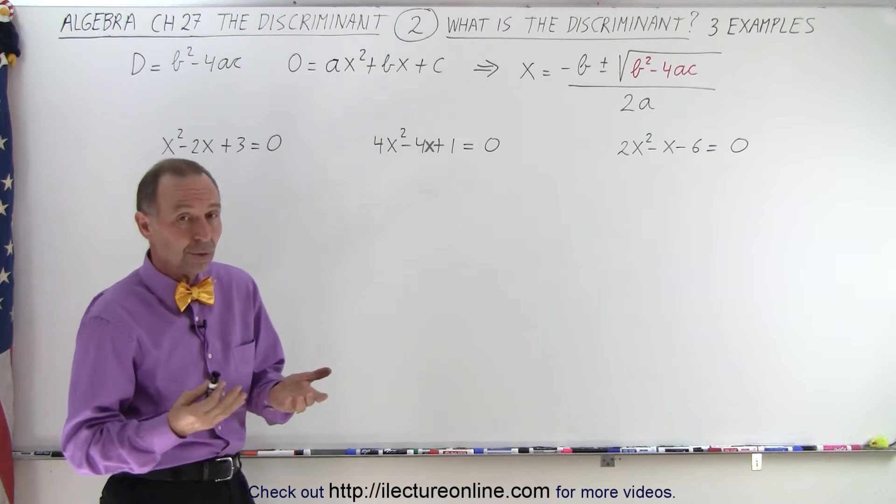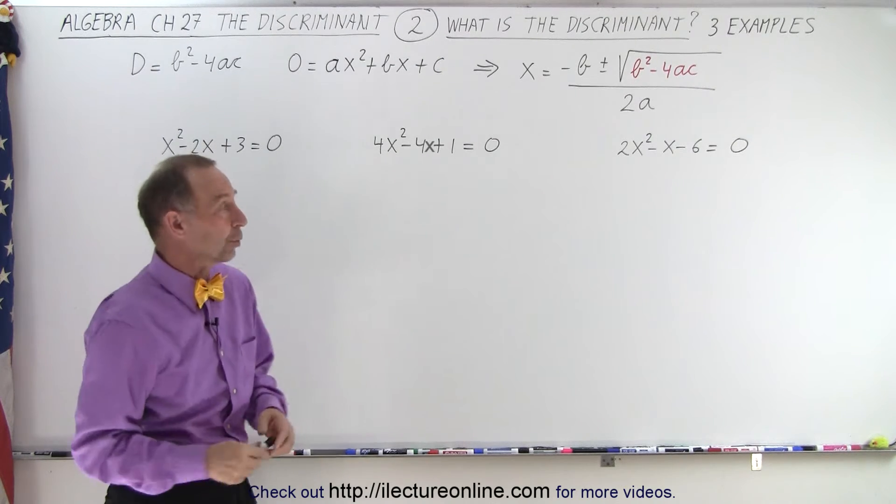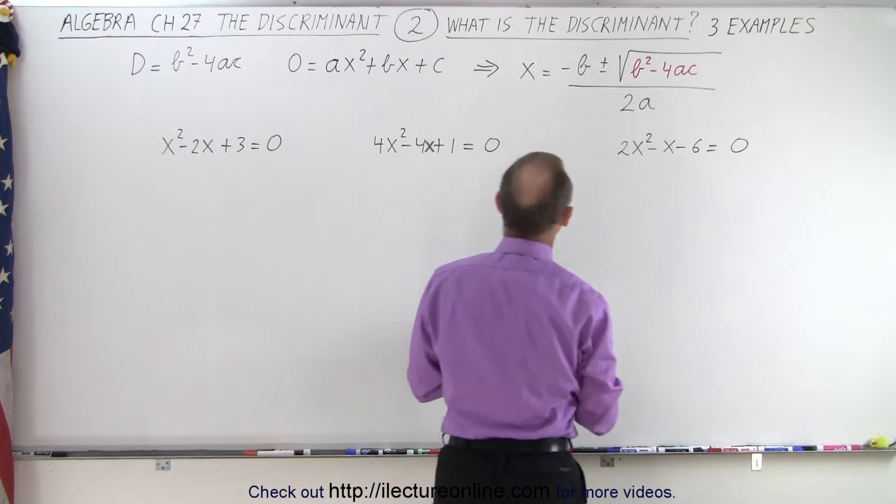What we need to do is plug the coefficients a, b, and c for each of the three equations into the quadratic formula and see what b² - 4ac equals.